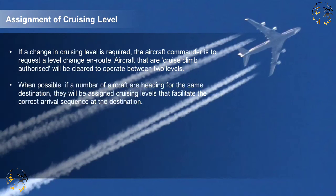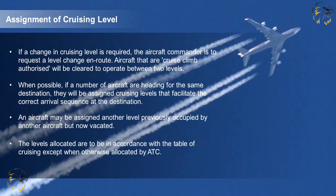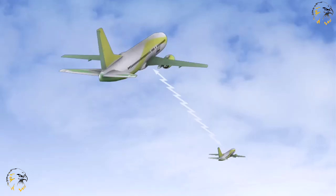When possible, if a number of aircraft are heading for the same destination, they will be assigned cruising levels that facilitate the correct arrival sequence at the destination. An aircraft may be assigned another level previously occupied by another aircraft but now vacated. The levels allocated are to be in accordance with the table of cruising levels, except when otherwise allocated by ATC. Pilots in direct communication with each other may, with each other's concurrence, be cleared to maintain a specified vertical separation between their aircraft during ascent or descent.